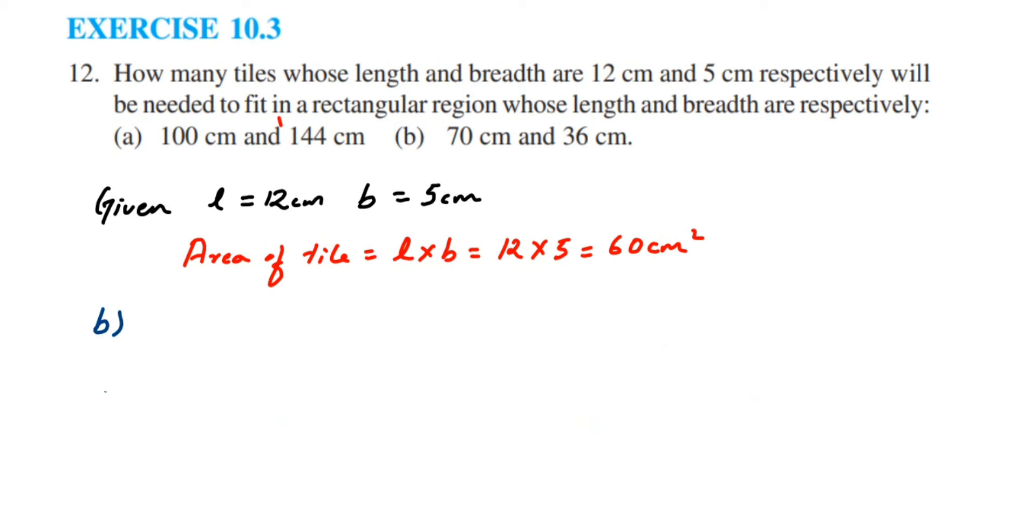Now, here we go. The second one. The length here is 70, so 70 centimeter and breadth here is 36, so 36 centimeter. So area is equal to length into breadth, which is equal to 70 multiplied by 36. So when you multiply 70 and 36, we'll get 2520 centimeter square.